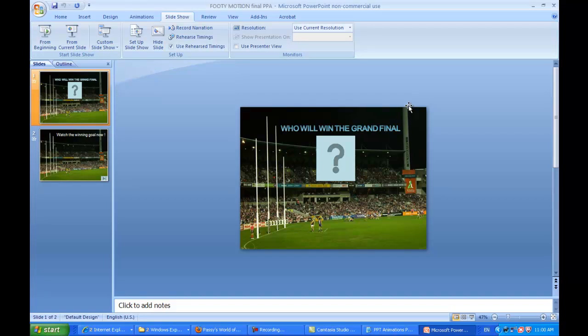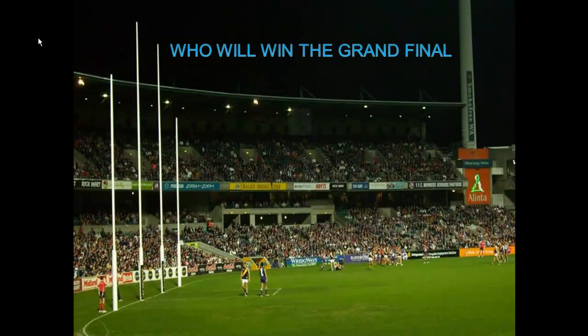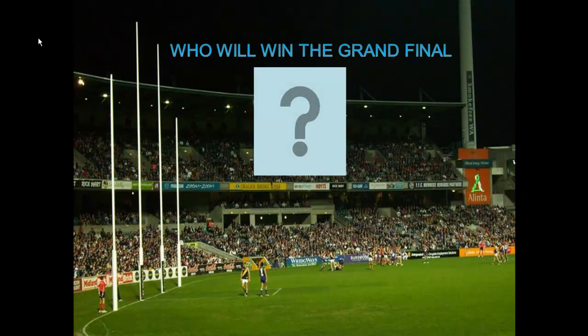This is PASI's World of ICT, using a PowerPoint animation with motion paths. Let's have a look at the animation and what it does. A heading comes in and then a drawing picture. Who will win the grand final? That's the AFL grand final between Australian football teams.